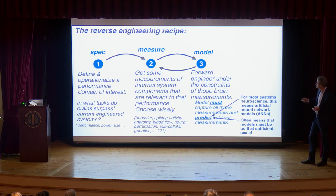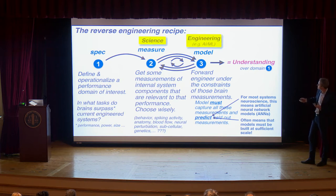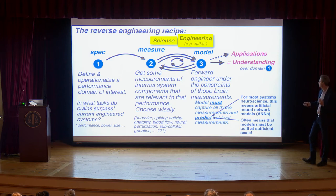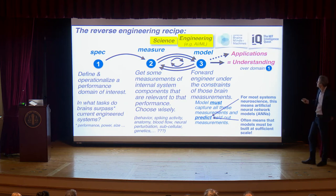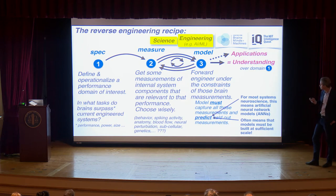You don't just do this in a one-way loop. You end up with a family of models that need to be better culled by more measurements, build better models, more measurements — and the faster you make this cycle go, the faster we converge on our human understanding of the system. This blending of science and engineering is embodied at MIT by our Center for Brains, Minds, and Machines, and also an Intelligence Quest initiative.